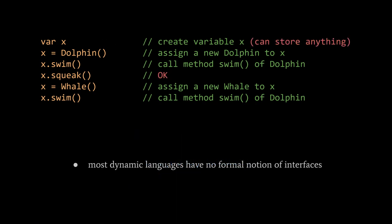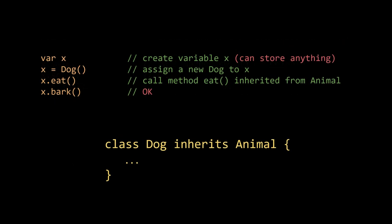Interfaces are generally not formalized in dynamically typed languages. With dynamic typing, any variable can store anything, and so the compiler can't check whether method calls are valid. At runtime in these languages, calling a method only triggers an error if the type has no such method. If we're using a dynamic language, the call to squeak here is valid because when the call is made, X will store a dolphin which does have such a method. Likewise, with our inheritance example, if we're using a dynamically typed language, the call to bark here succeeds because, at the time, X stores a dog which does have such a method.